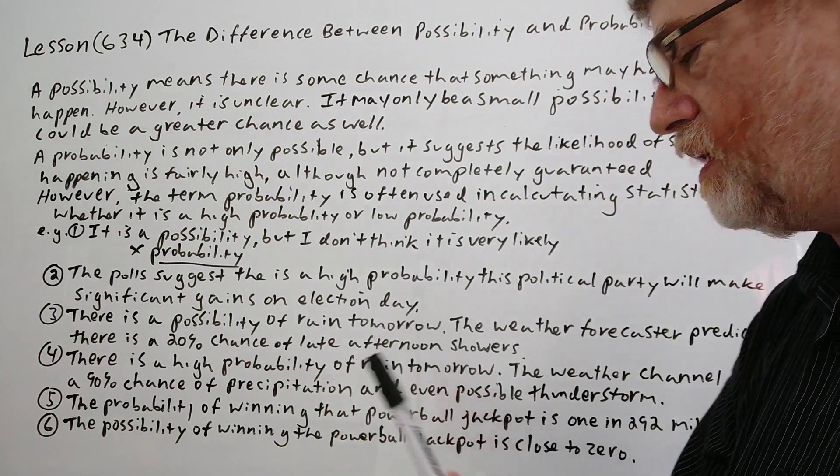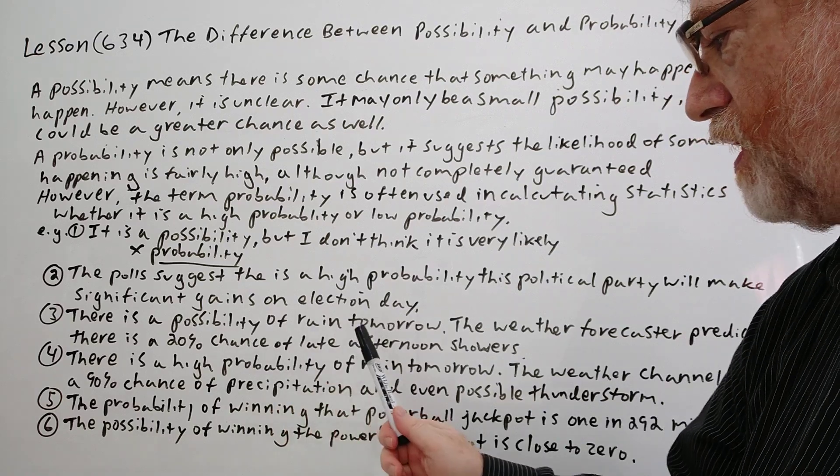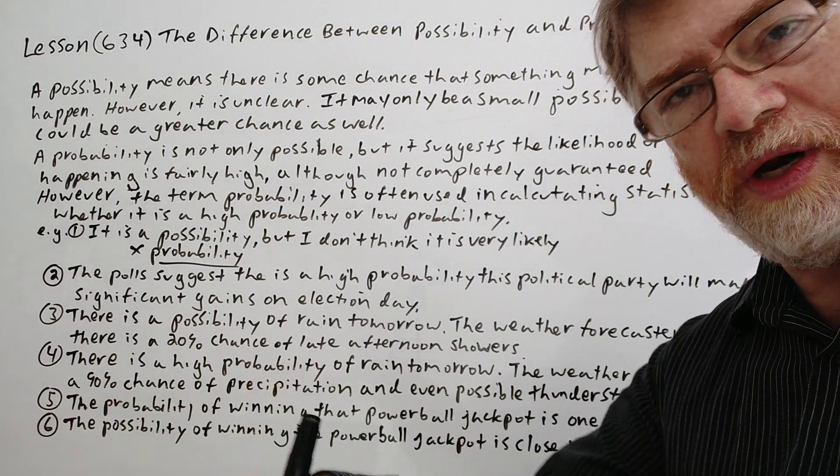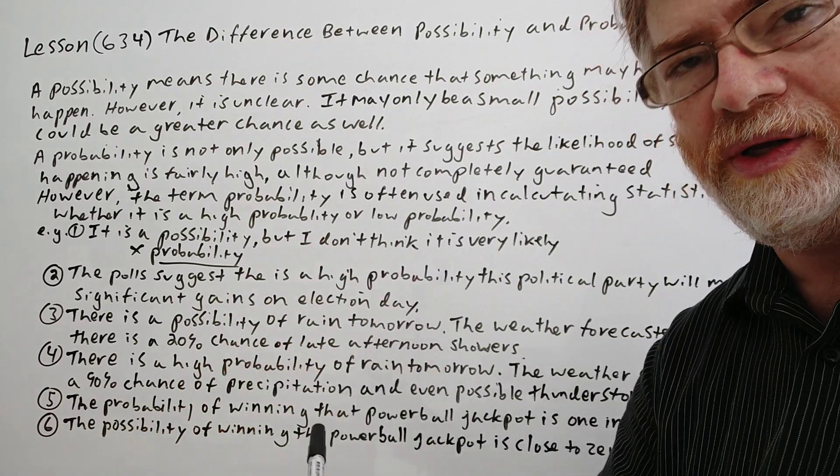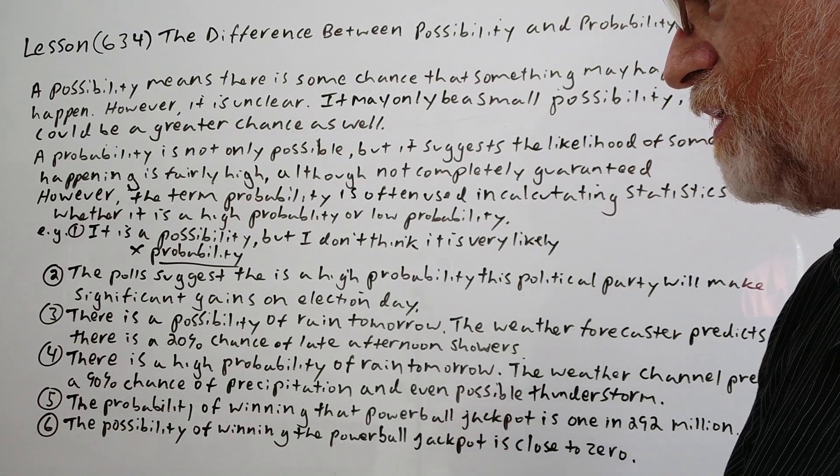Number three: There is a possibility of rain tomorrow. The weather forecast predicts there is a 20 percent chance of late afternoon showers. Again, when the number is low like 20 percent or maybe lower, you're more likely to use possibility than probability.